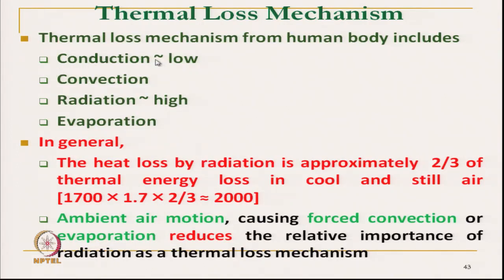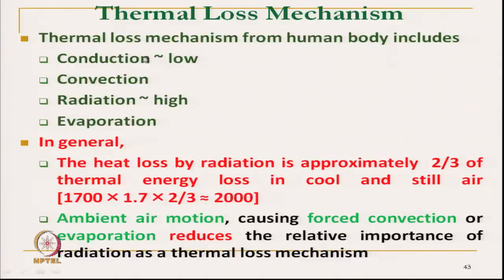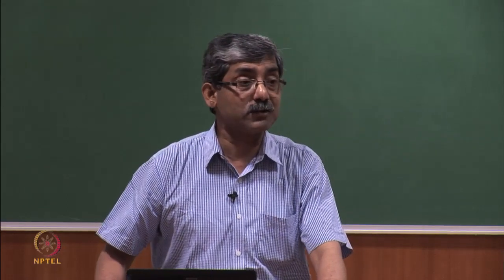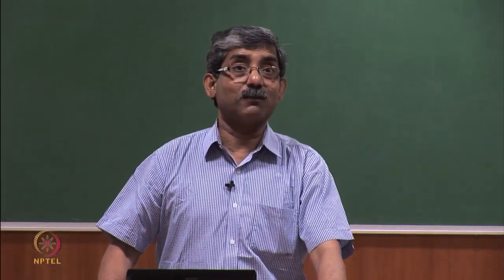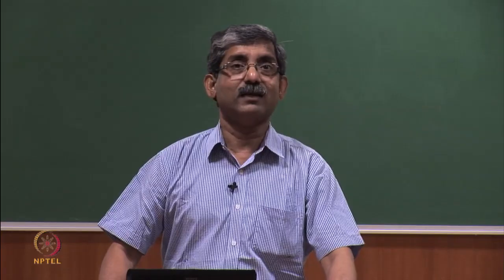The thermal loss mechanisms of the body are: conduction, which is very low since most textile materials are insulating in nature (even air is insulating); convection, which is very significant when air is blowing — that is forced convection; and radiation, which is generally very high. In the case of forced convection at very high air velocity, it may actually suppress radiation as well. In dry air conditions with low humidity, evaporation will be high.